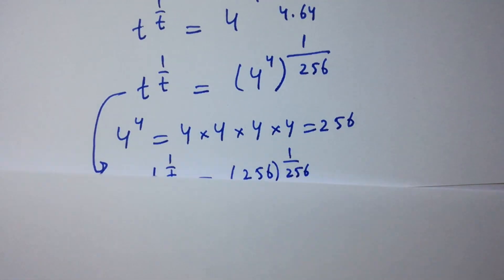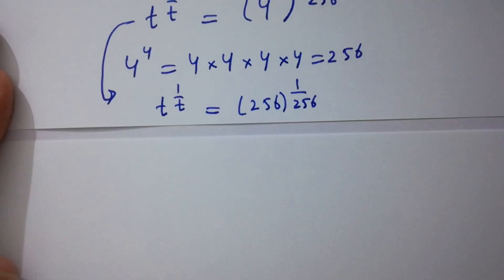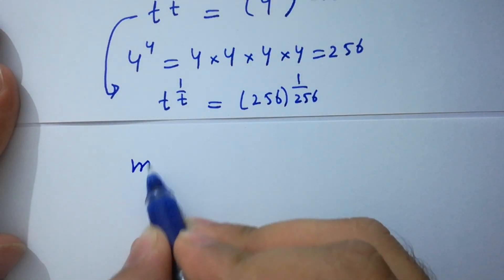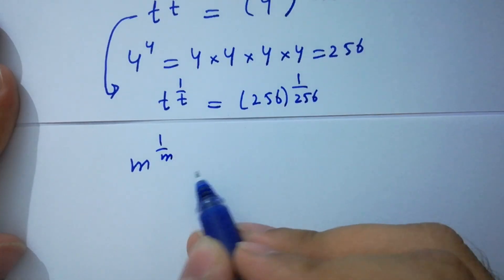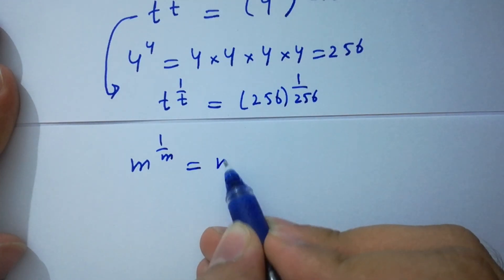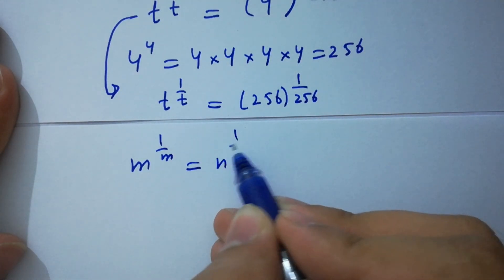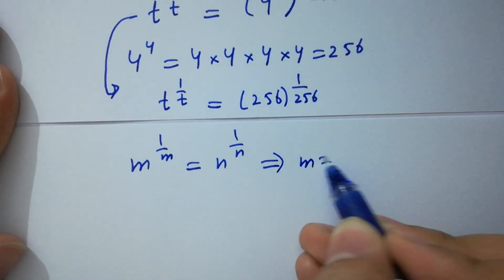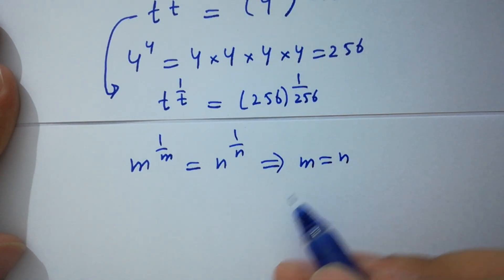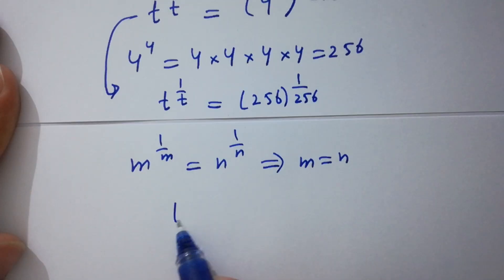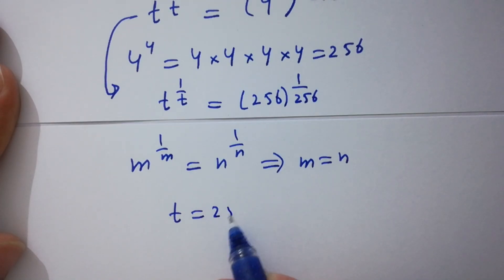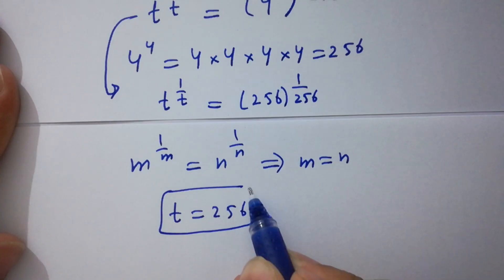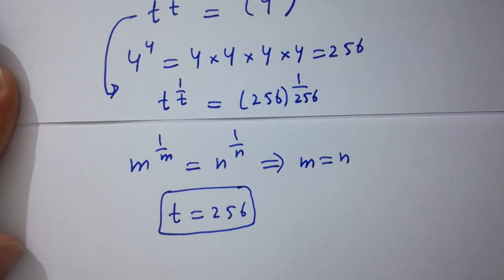As we know, if m to the power 1 over m equals n to the power 1 over n, then m equals n. So t will be equal to 256, which is the value of t.